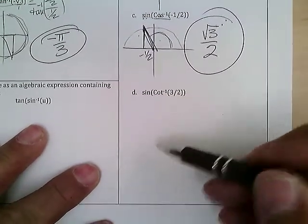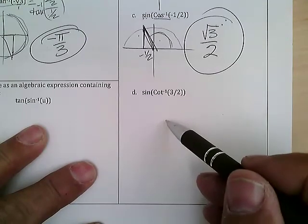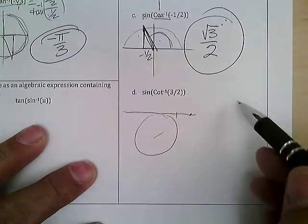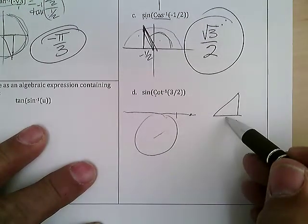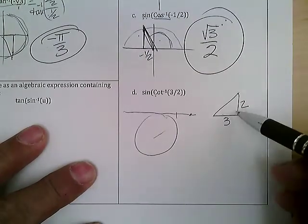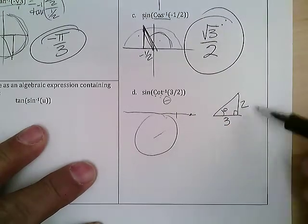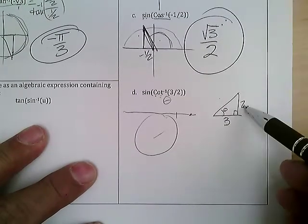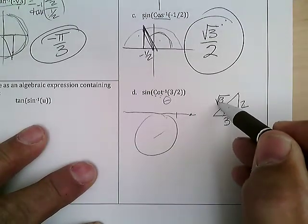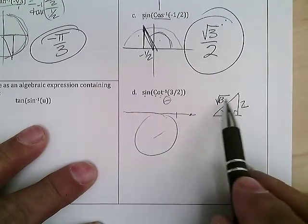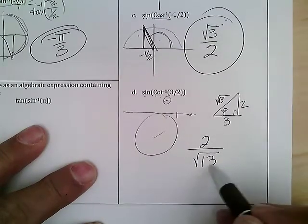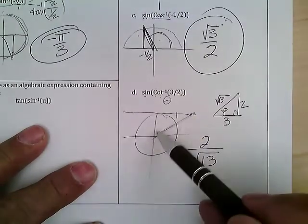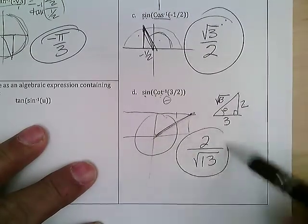D: cotangent is 3/2. Cotangent is on this line, 1½ out — a little tough. Some of you drew the triangle and said cotangent is cosine over sine. With cotangent = 3/2, the hypotenuse is √(3² + 2²) = √13. The sine would be opposite over hypotenuse: 2/√13. Since it's in the first quadrant, the sine is a positive value: 2/√13.